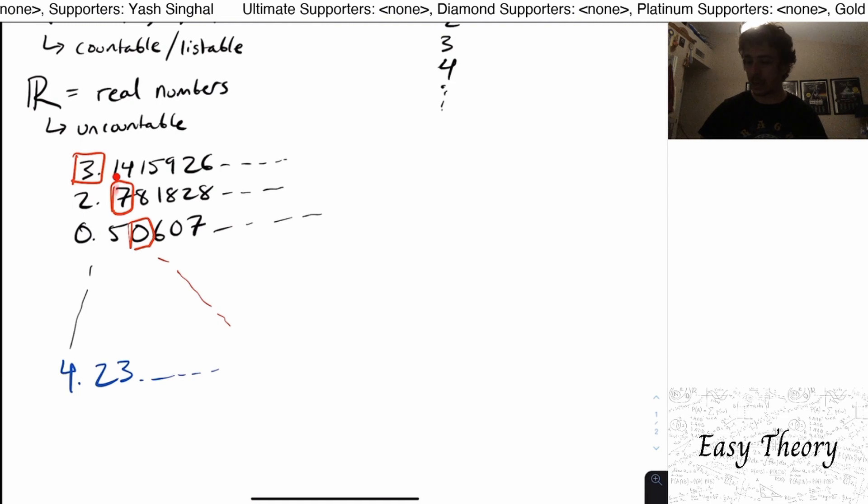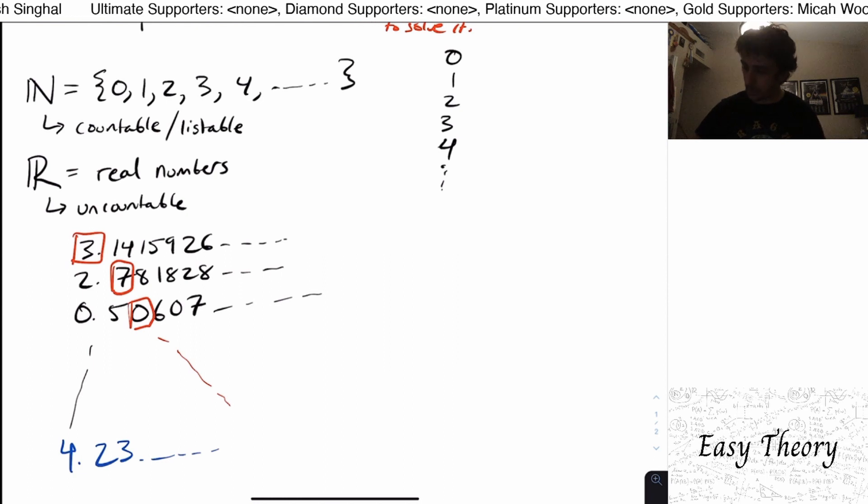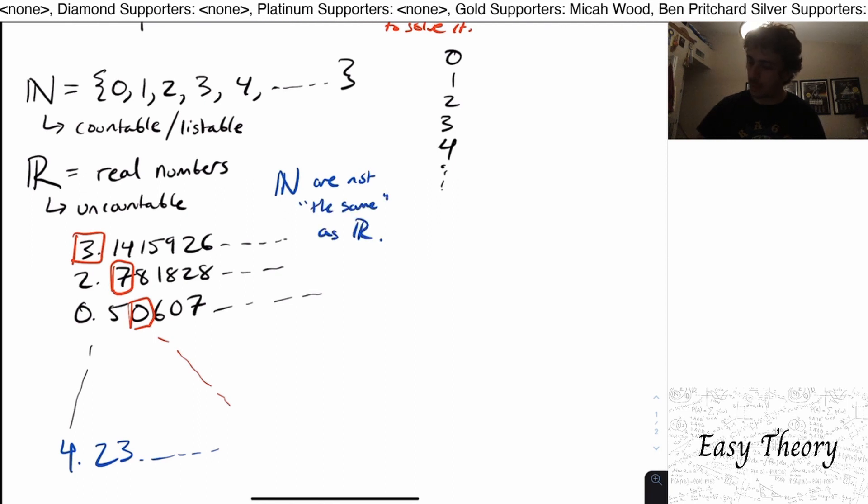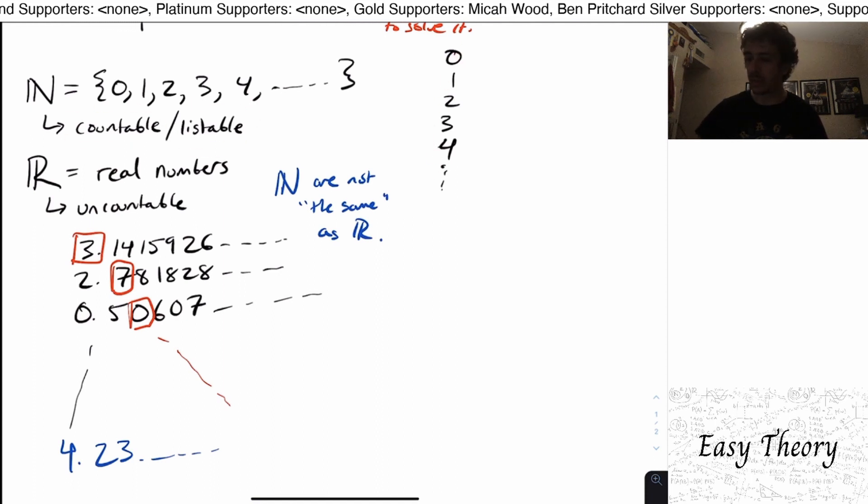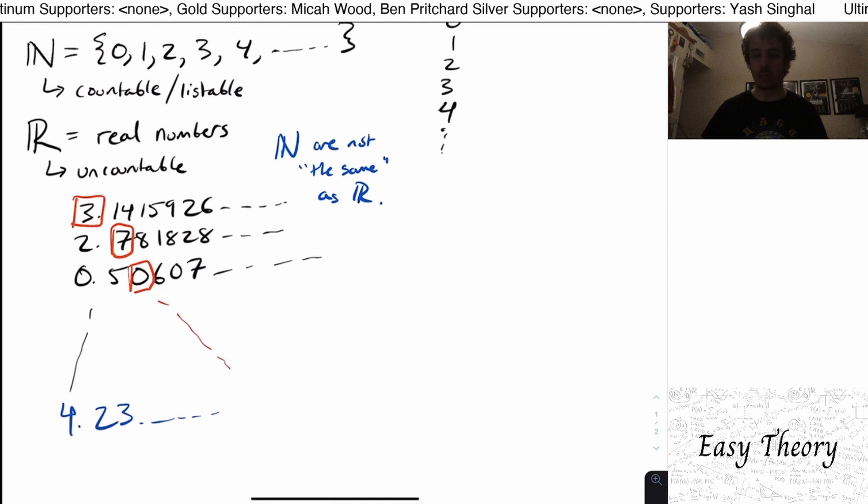So that's a contradiction that the list that I had was complete. So what you can show is that the natural numbers are not the same as the real numbers because the natural numbers are listable. We can write them in a list and the real numbers are not listable. They're uncountable. So why does this have any relevance whatsoever?